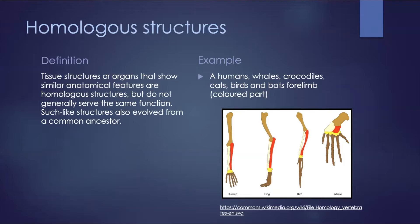Such identical structures are unlikely to have evolved independently within every species. It is more probable that the basic bone arrangement had been present in a common ancestor of humans, whales, crocodiles, cats, birds, and bats. Comparing homologous structures, one can see that they are more beneficially adapted to the environment of each species, induced by natural selection.